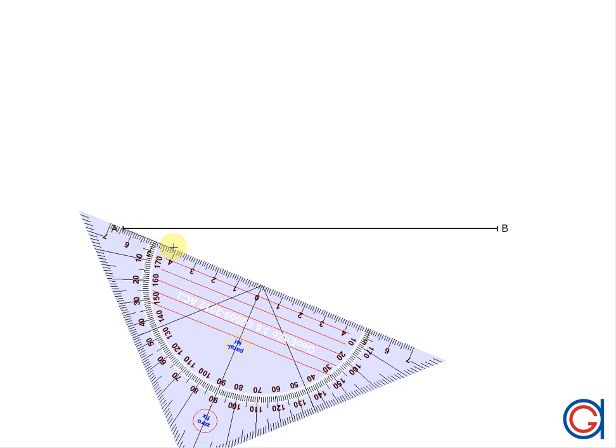To do this we are going to draw a line starting from point A of our line segment AB at any angle as shown here in the video.